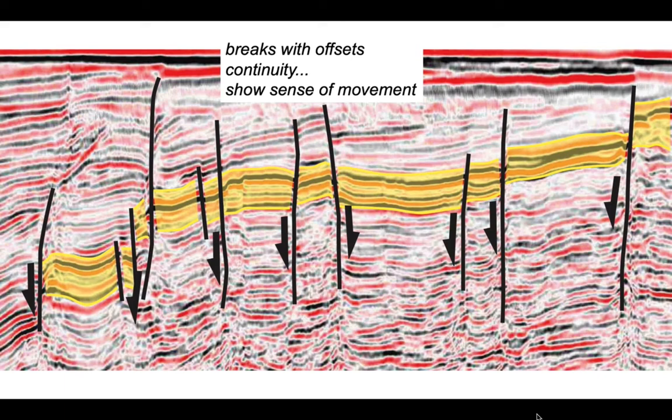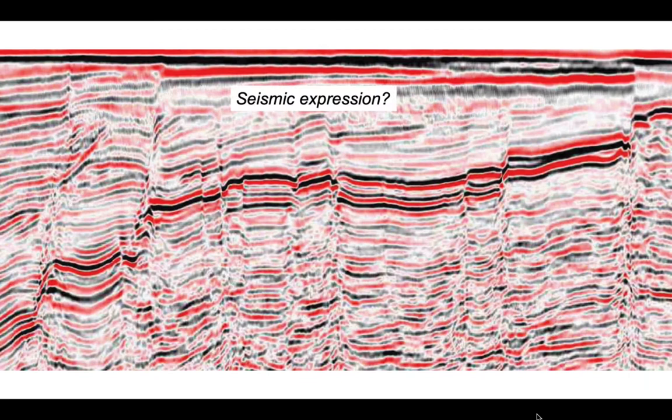So when tracing faults this is what we want to do: we want to identify the continuity of faults, their planes in three dimensions, lines in the profile, and we want to interpret the sense of movement on these fault surfaces. So how do we identify faults in the first place? What is their seismic expression?